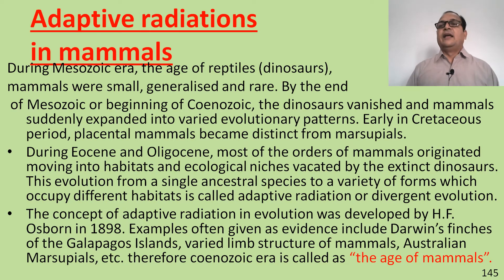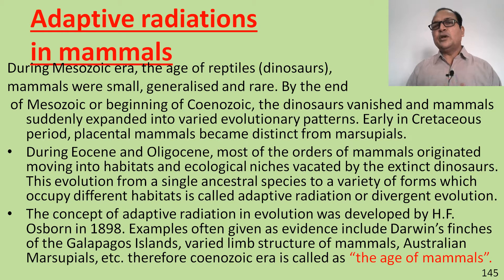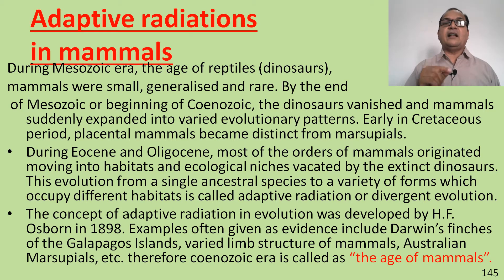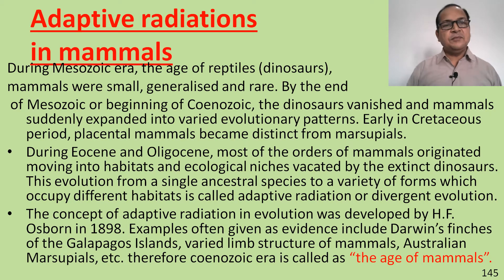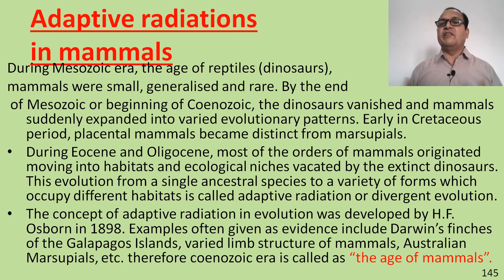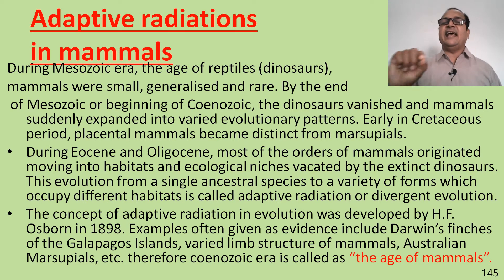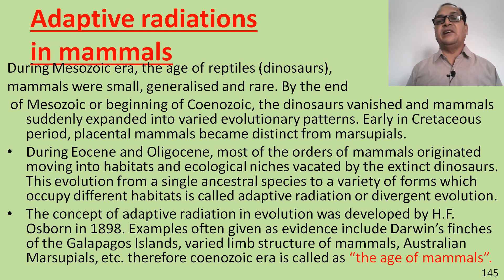During the Mesozoic era — the age of reptiles — mammals were small, generalised, and rare. By the end of the Mesozoic or the beginning of the Cenozoic, the dinosaurs vanished and mammals suddenly expanded into varied evolutionary patterns.